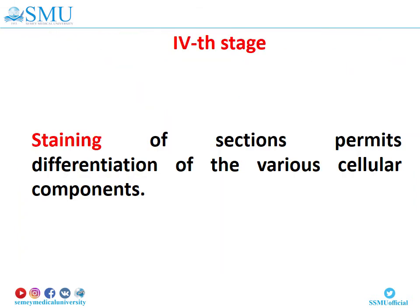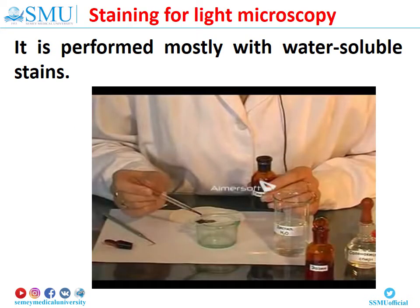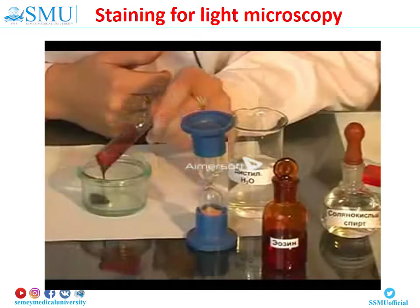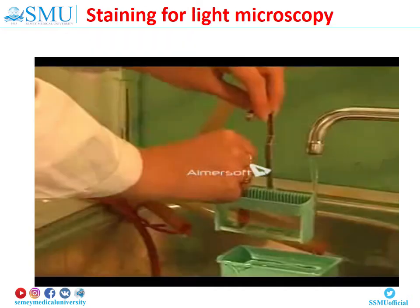Stage number 4: Staining of sections, which permits differentiation of the various cellular components. Staining for light microscopy is performed mostly with water-soluble stains. Therefore, the paraffin must first be removed from the mounted sections, after which the tissue is rehydrated and stained. After staining, the section is again dehydrated so that the cover slip may be permanently affixed using a suitable mounting medium. The cover slip not only protects the tissue from damage but is also necessary for viewing the section with the microscope.